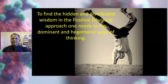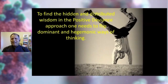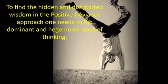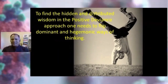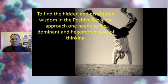In order to find the hidden and distributed wisdom, one needs to flip the traditional dominant and hegemonic ways of thinking. We develop a sort of trained incapacity — we are incapacitated by our training, the way we are trained, for instance, to look at the normal curve, to make inferences, and so on. And so the positive deviance approach is an invitation for us to flip these dominant and hegemonic ways of thinking.